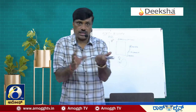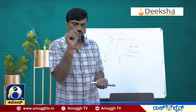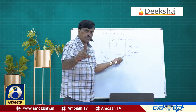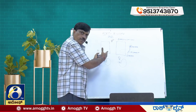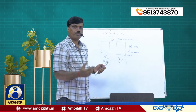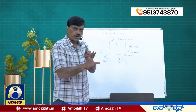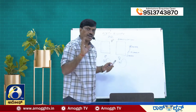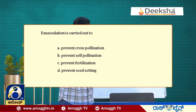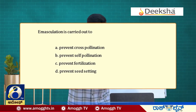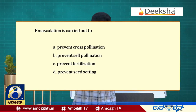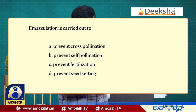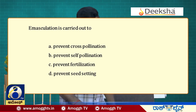The male parent is kept intact because it is meant to contribute pollen grains, so you should not remove its anthers. Anthers are removed only from the female parent, and only before dehiscence. The purpose is to prevent self-pollination. Therefore the answer is B: to prevent self-pollination.